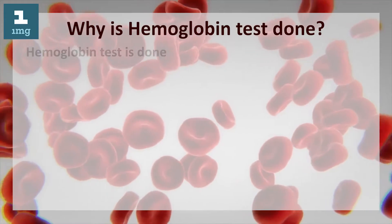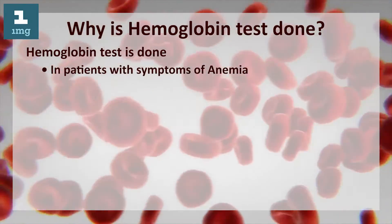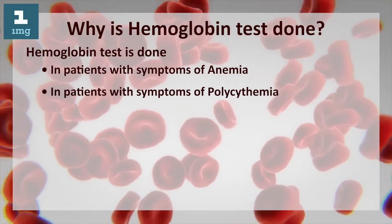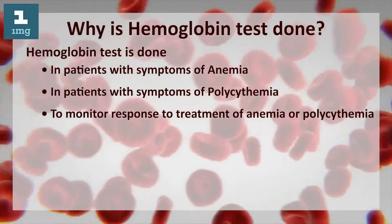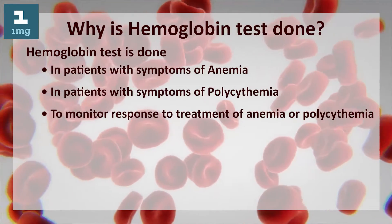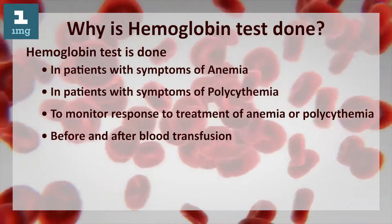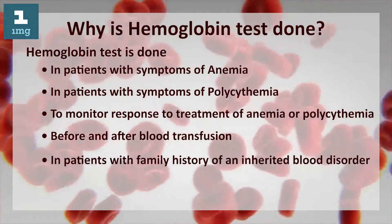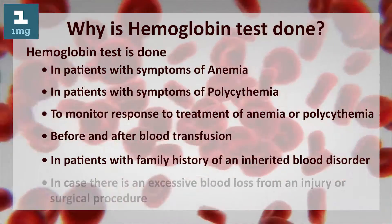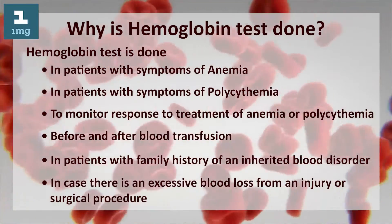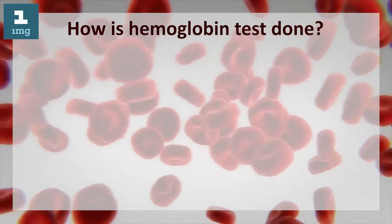Why is the hemoglobin test done? The hemoglobin test is done in patients with symptoms of anemia or polycythemia, to monitor response to treatment of anemia or polycythemia, before and after blood transfusion, in patients with a family history of an inherited blood disorder, and in cases of excessive blood loss from an injury or surgical procedure.